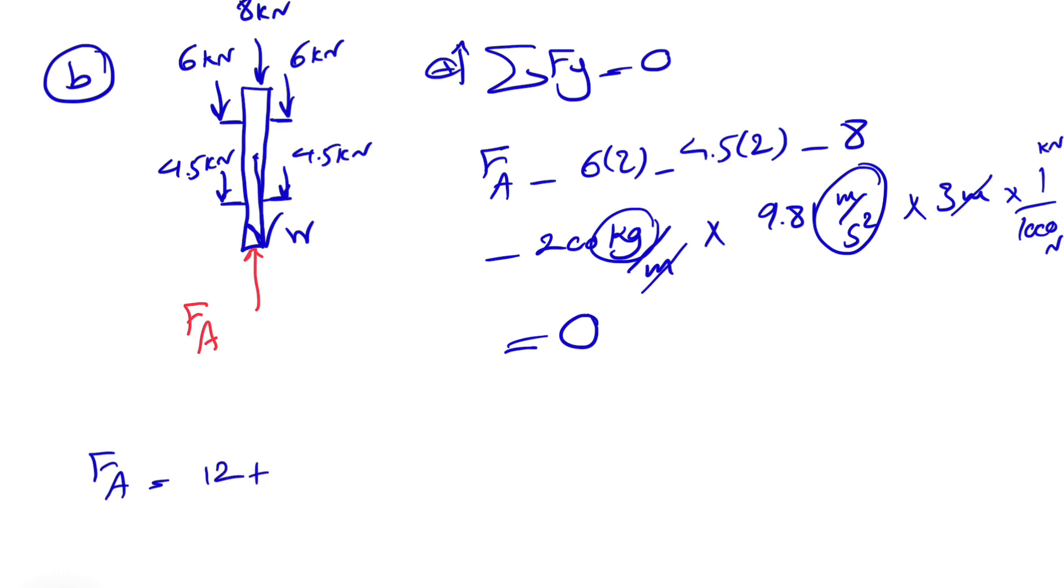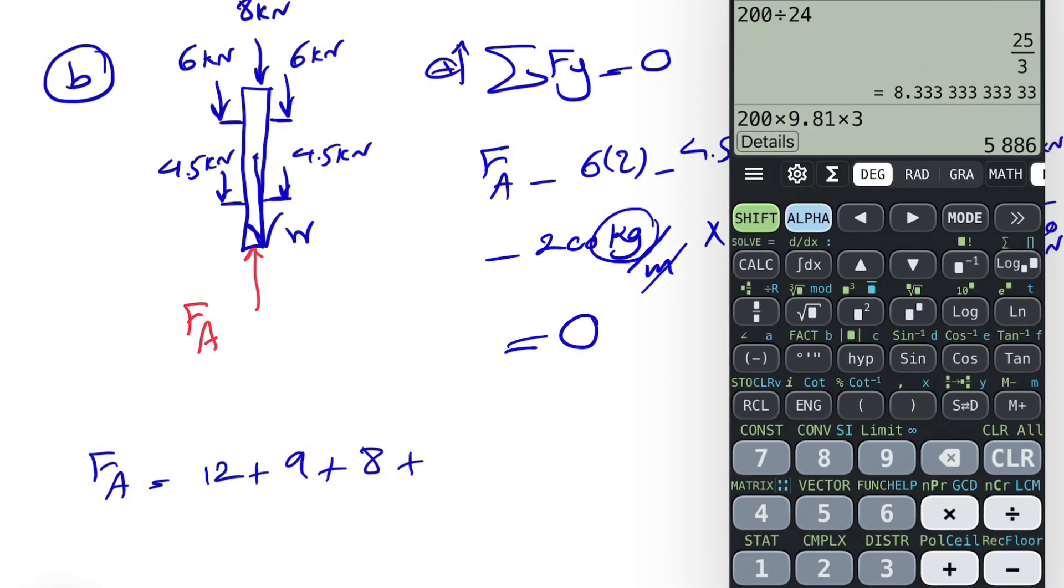If you want to calculate FA, we basically have 12 plus 4.5 times two is nine, plus eight, plus 200 times 9.81. Let's calculate this. 200 times 9.81 times three, divided by a thousand to get it in kilonewtons. That's going to give us 5.886.